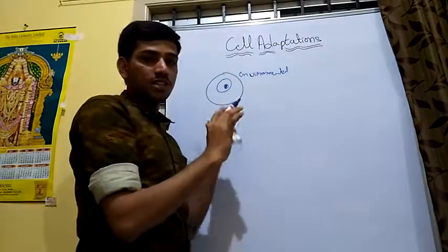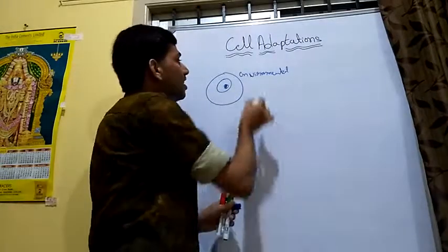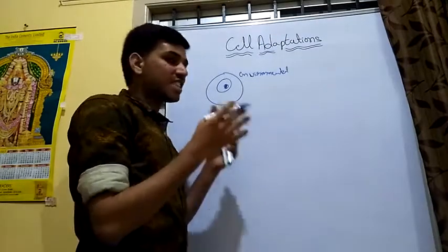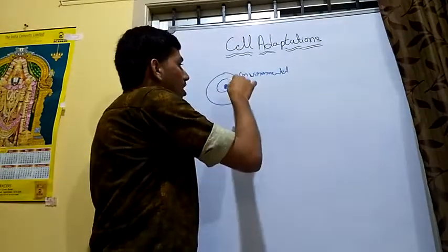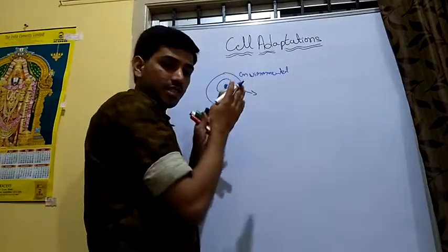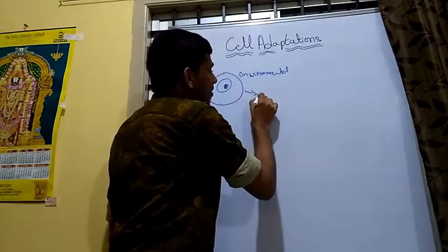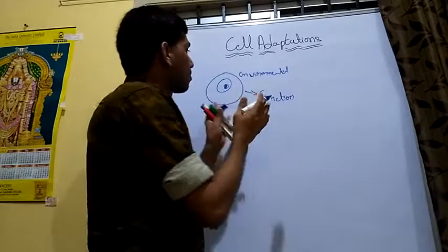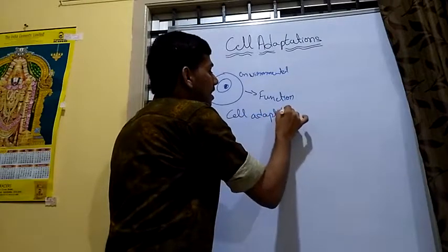The cell has some functions that are characterized by or conducted by the cells. These functions are altered by environmental factors, chemical agents, any disease conditions, or stress within the body. Although the cell survives along with any stress or changes, it continues its functions by means of small alterations or small adaptations. This is called cell adaptation.